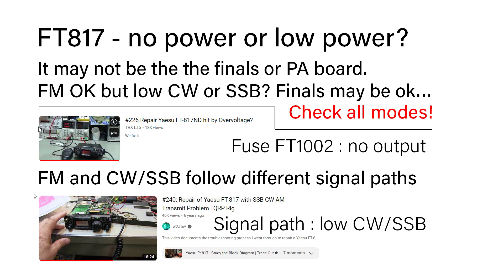Component issues in the signal path can give the appearance of low or no power on SSB or CW because FM follows a different path to SSB and CW. It's worth really thoroughly checking - you can have low power on one, full power on the other. Make absolutely sure that it is the board you need to replace before going ahead and buying one and fitting it.